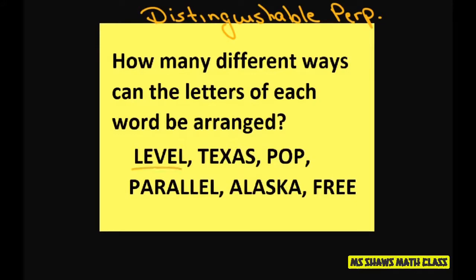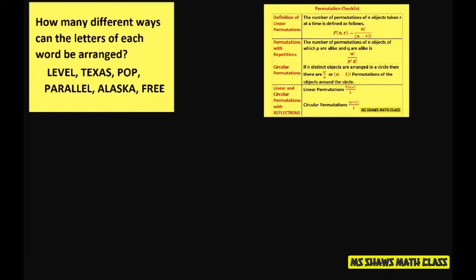So let's look at this first one. Basically we're looking at permutations with repetitions. Because they look alike, they have to be distinguishable. For our first word level, our n, or our total, our number is 5. That's your total number.